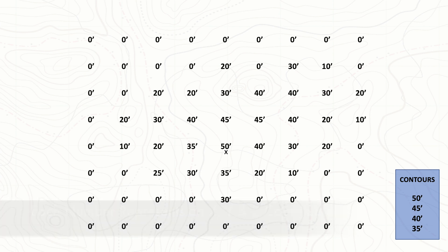It's actually quite simple. The first thing we do is designate what contours you would like to draw. We're going to look at the 50-foot mark, a 45-foot mark, a 40, and a 35. The first thing we see is only one 50, so this is going to be our only 50-foot contour line, which is pretty simple.